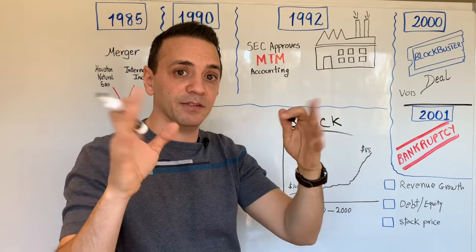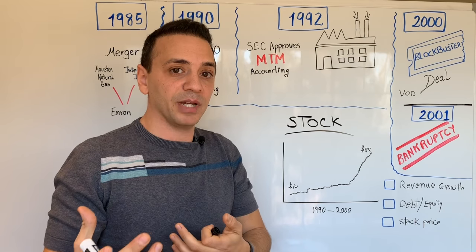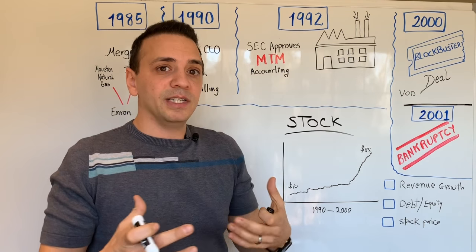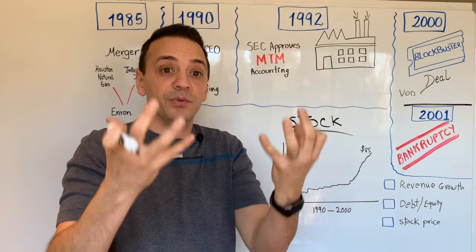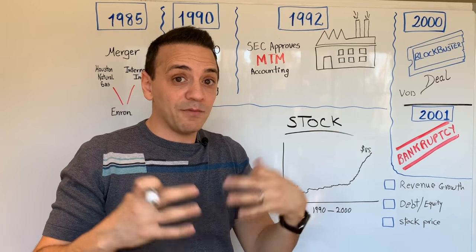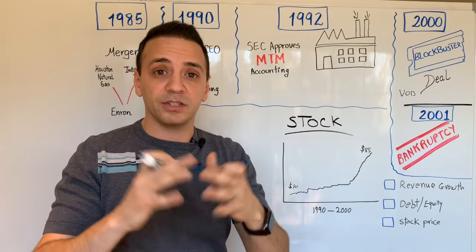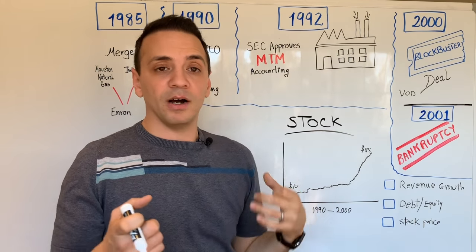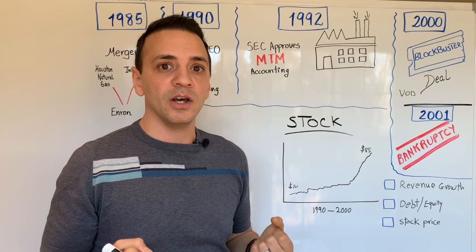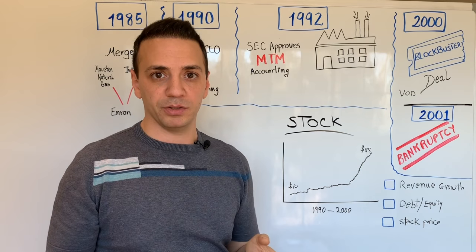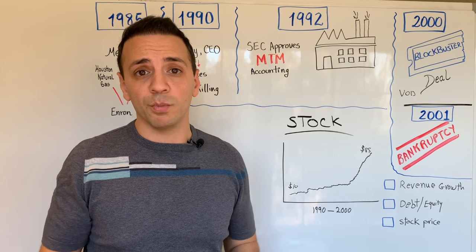This partnership was going to allow Blockbuster to stream movies online — this was before Netflix created the video-on-demand service — and Enron was going to provide the broadband internet service behind it. Enron then took the profits from the contract they expected to make in the future and booked it as revenue in the year 2000, obviously inflating revenue by a big margin. The deal went nowhere because the technology wasn't there yet, and this was the beginning of the end for Enron, because the cash actually coming in wasn't matching the revenue being booked.